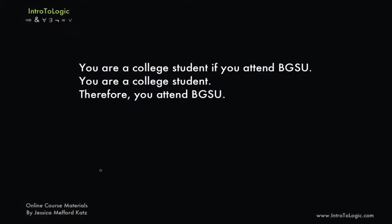Let's take a look at another example. Here we have the reasoning: you are a college student if you attend BGSU; you are a college student, therefore you attend BGSU. Right off the bat, you might find something fishy with this argument. It doesn't seem like it follows from premises one and two that you attend BGSU — that the mere fact that if you attend BGSU then you're a college student, and you are a college student, therefore you attend BGSU.